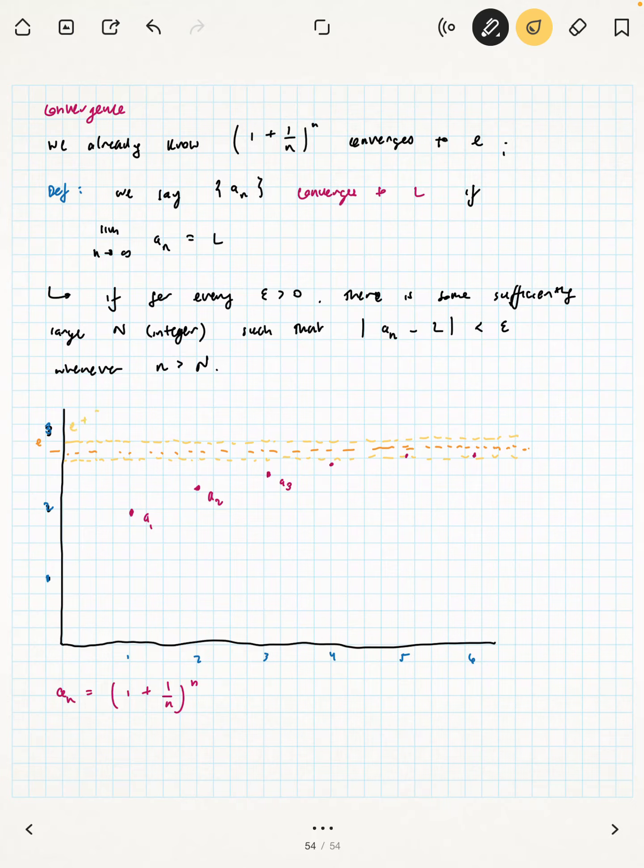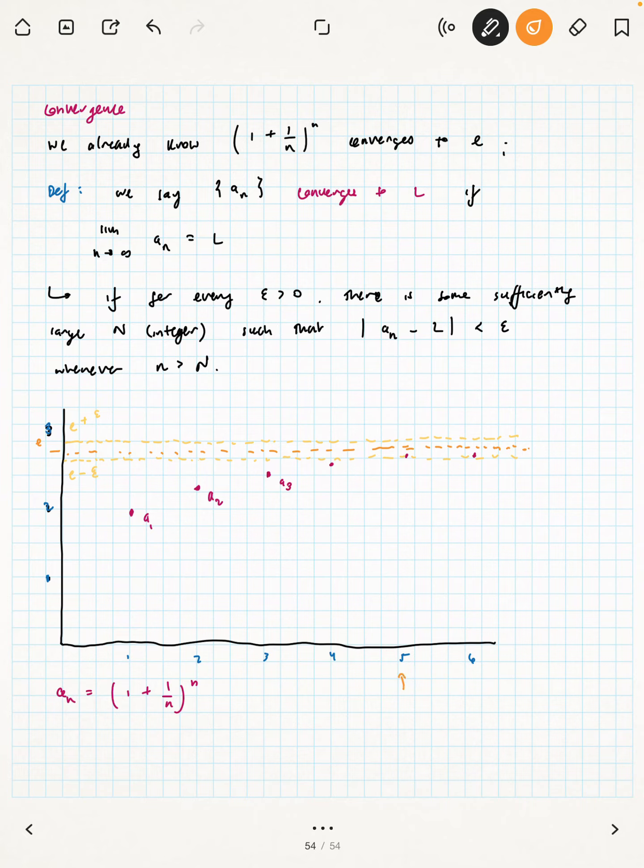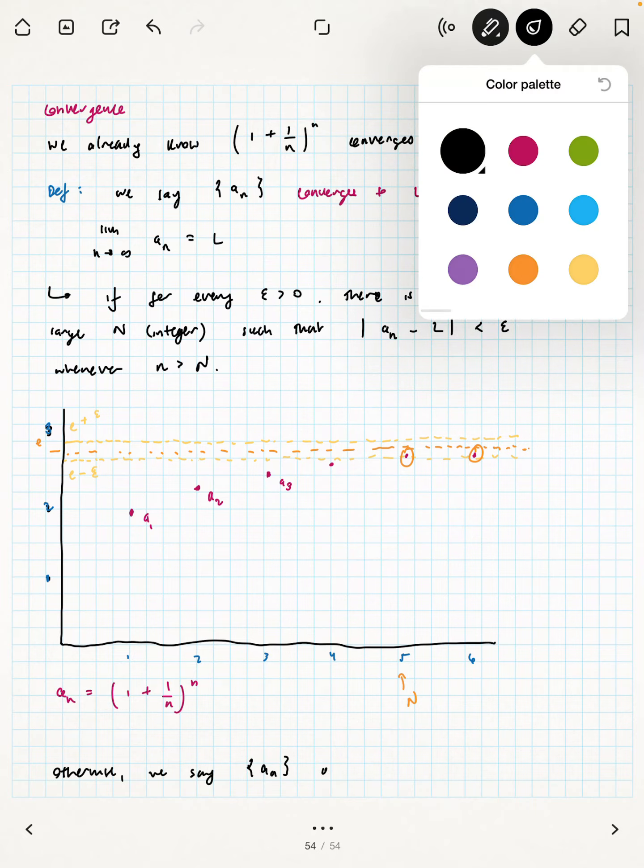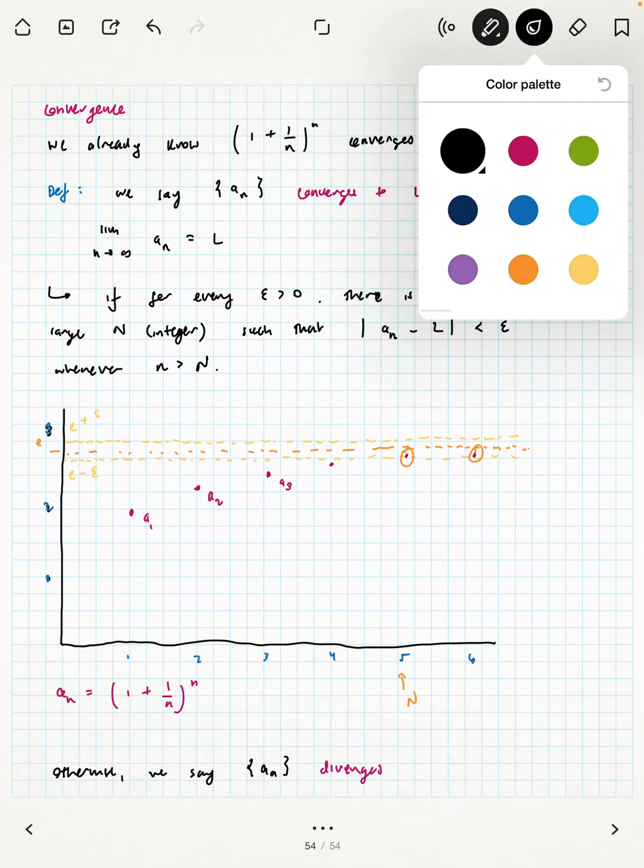Given how close we want to be close to that number, we're going to form an epsilon band around that value. E plus epsilon, E minus epsilon. Then there is some N, specifically this one, after which point all the terms in the sequence are going to be in that band, all of them. And that only happens if the limit exists. If a sequence doesn't converge, we say that the sequence diverges.